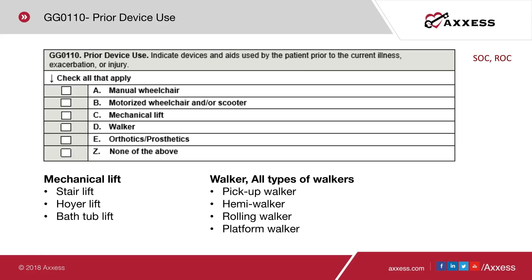GG0110, prior device use, is collected at start of care and resumption of care. This item identifies the patient's use of devices and aids immediately prior to the current illness, exacerbation, or injury to align treatment goals. This is a check-all-that-apply question assessing for use of a manual wheelchair, motorized wheelchair and/or scooter, mechanical lift, walker, orthotics, prosthetics, or none of the above.